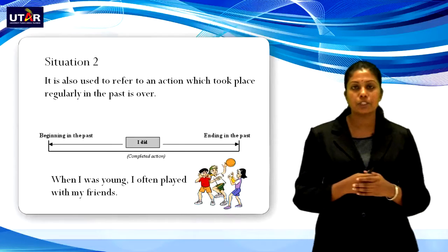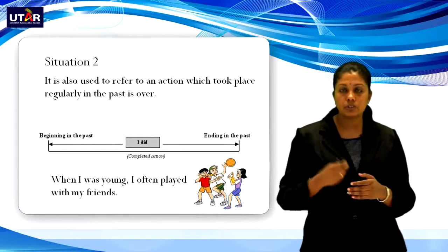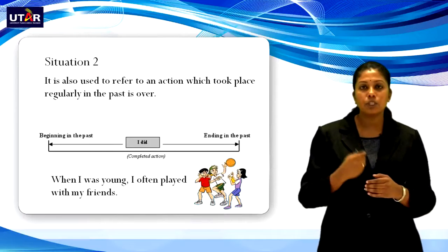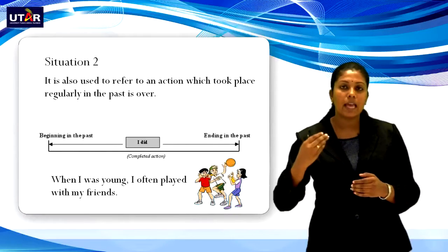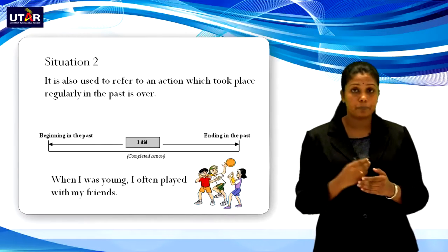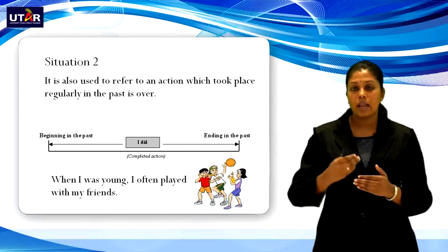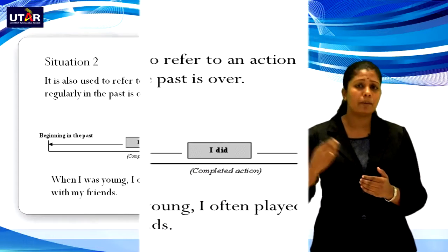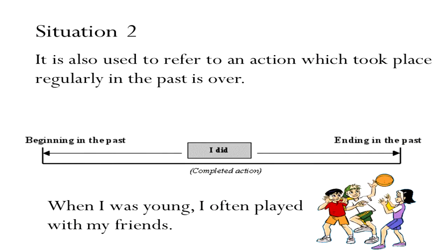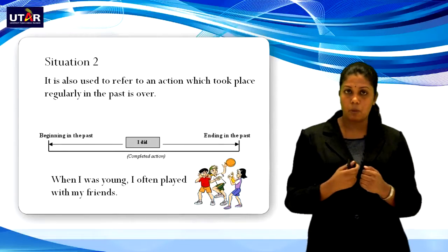Situation 2 — past simple is also used to refer to an action which took place regularly in the past but is now over. For example: When I was young, I often played with my friends. Here, when I was young is in the past, and playing with friends was a regular situation that is already over, so the verb is in past tense form.